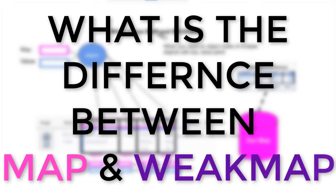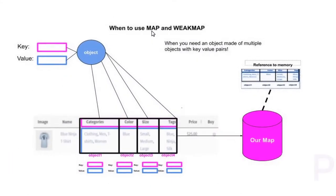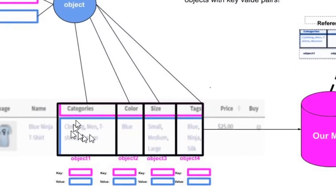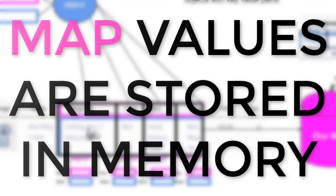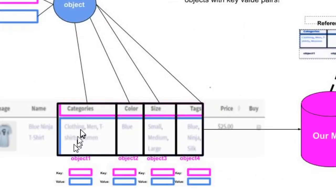So what is the difference between map and weak map? Well, working with map, all of these values from the keys and the values themselves are stored directly in memory.